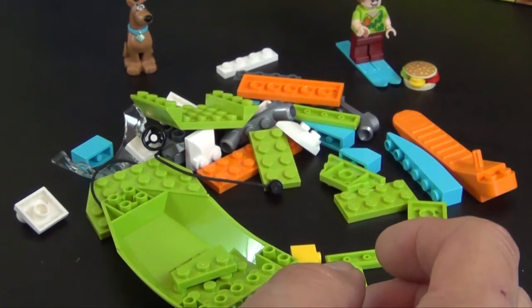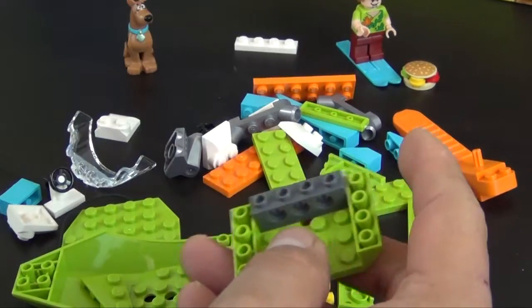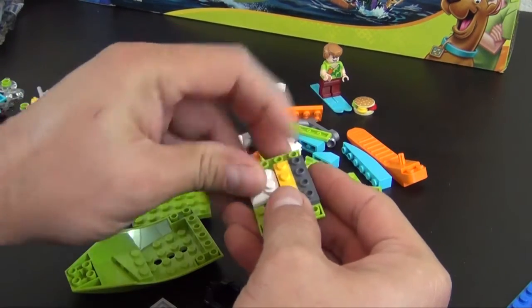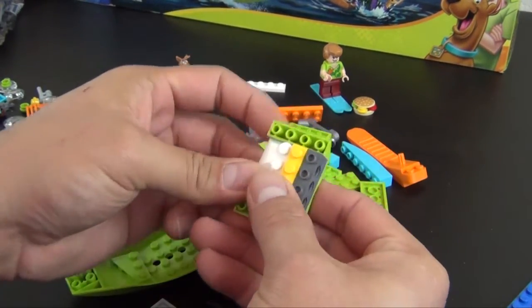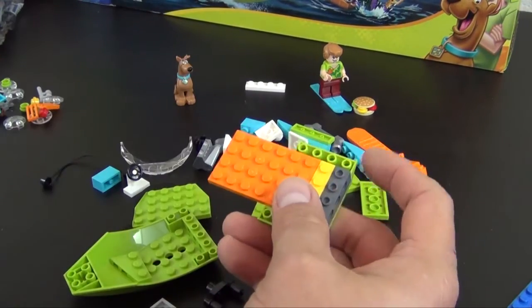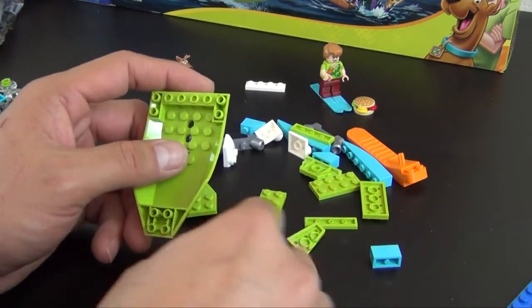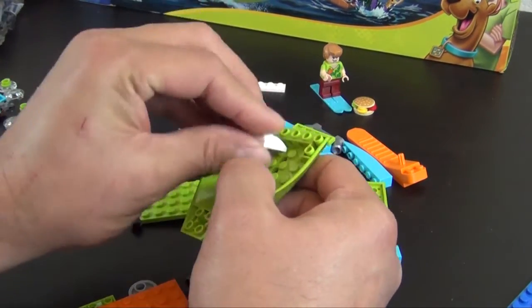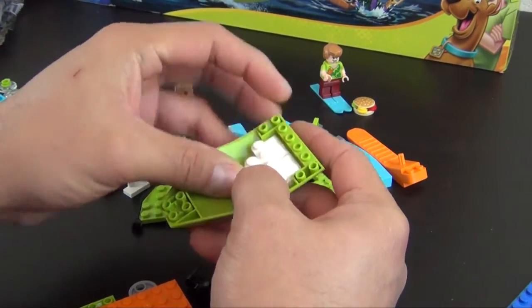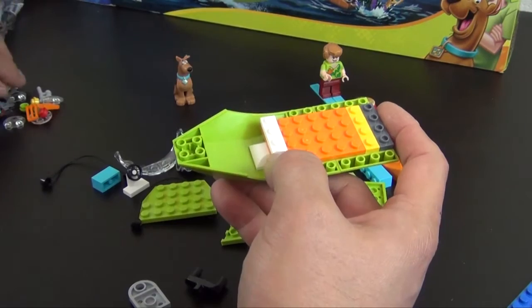Put that off to the side. So that's our two minifigures for this bag. We're going to start building the little boat, so this is an accessory to the haunted lighthouse. Of course these Scooby-Doo sets use a lot of different colors, so we see some lime green, some azure color, some oranges and yellows, just a slightly different color palette than your normal sets.